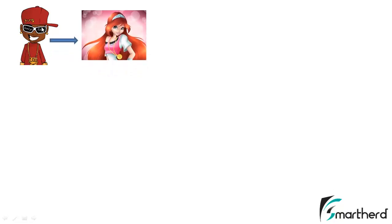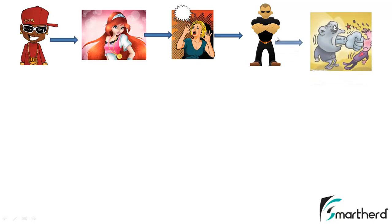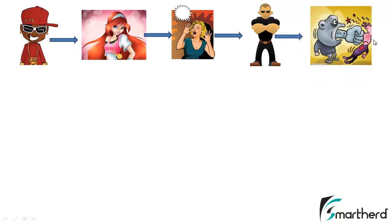Before we proceed I would like to introduce you with a basic example of event handling. Consider a rich spoiled brat, or an eve teaser, who dares to tease a girl walking down the street. This lady shouts, but no one around her hears her shout or dares to fight with the eve teaser except one — her boyfriend.